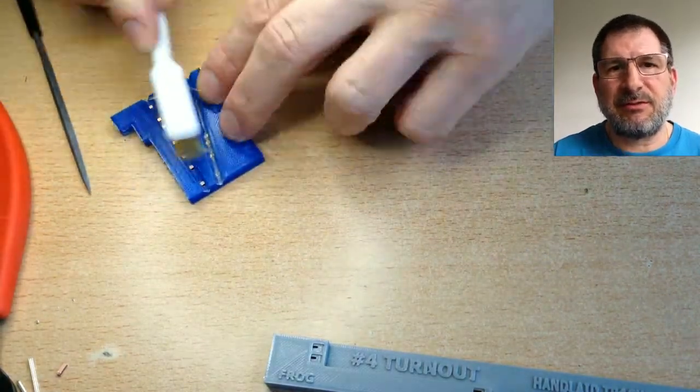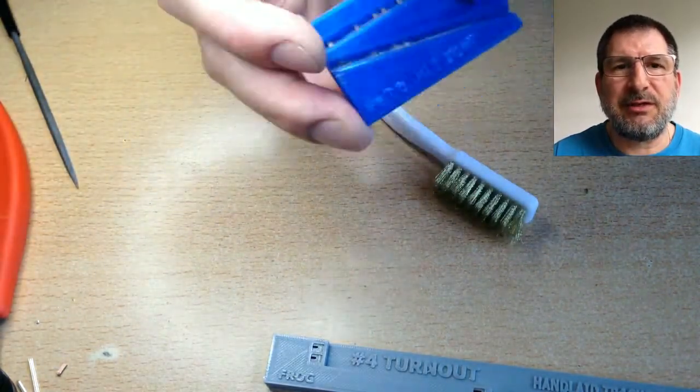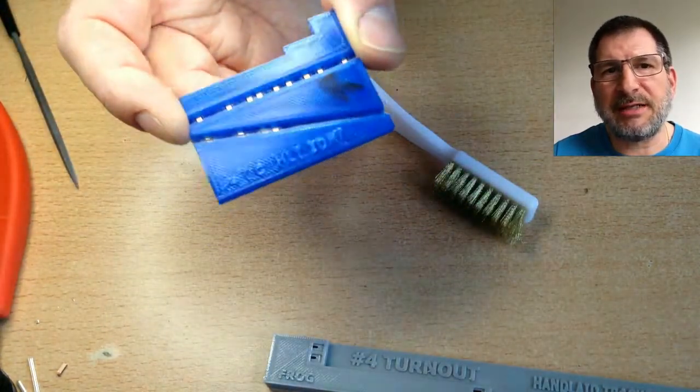One is for the diverging rail, which has two sets of gaps, and the other one is for the straight rail that most of the ties have a gap for.